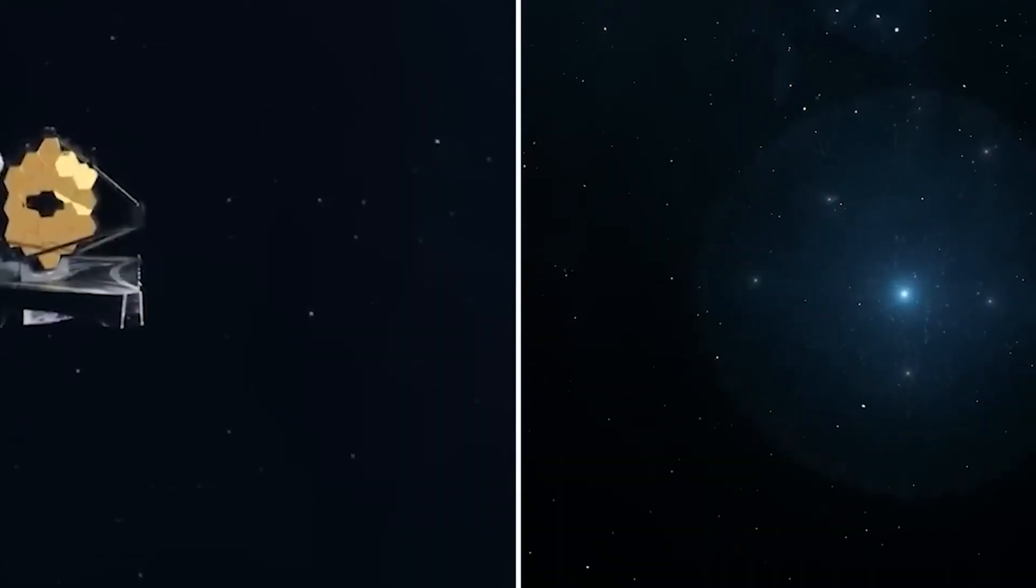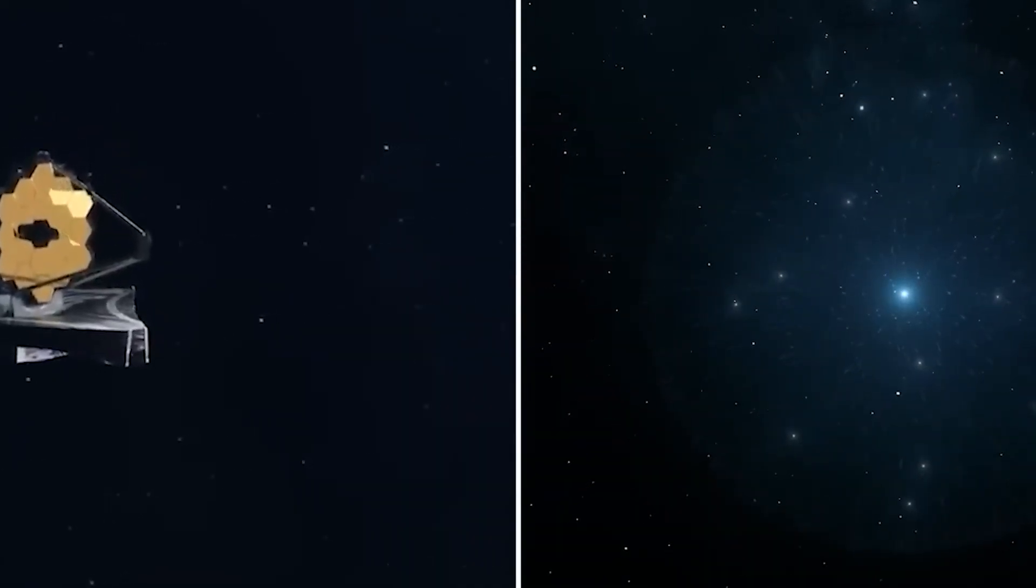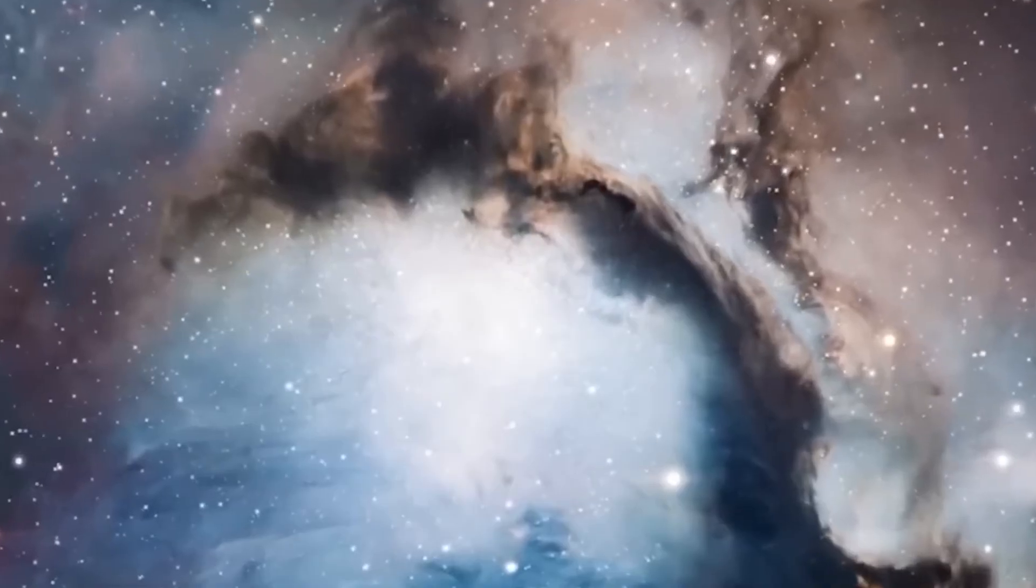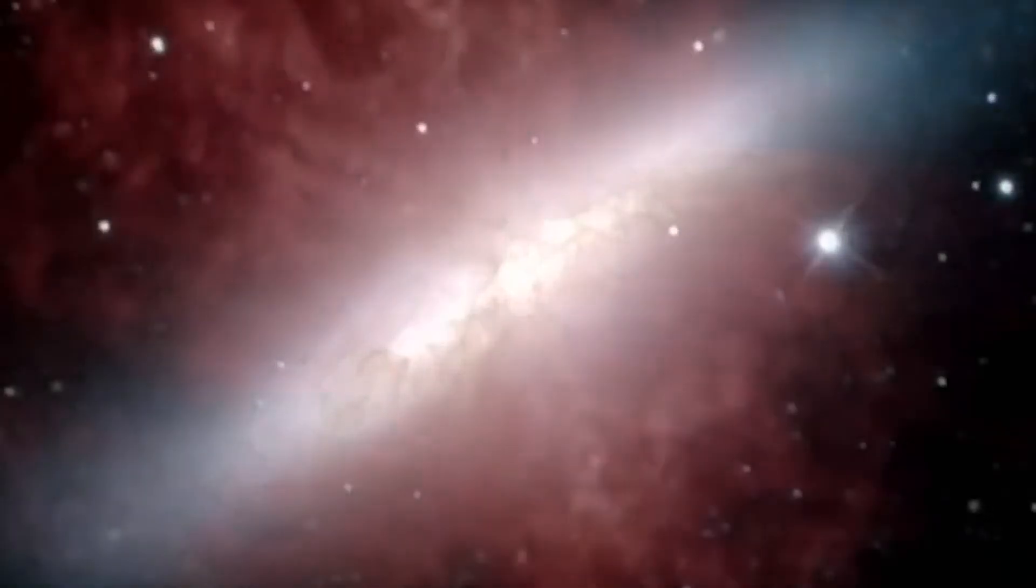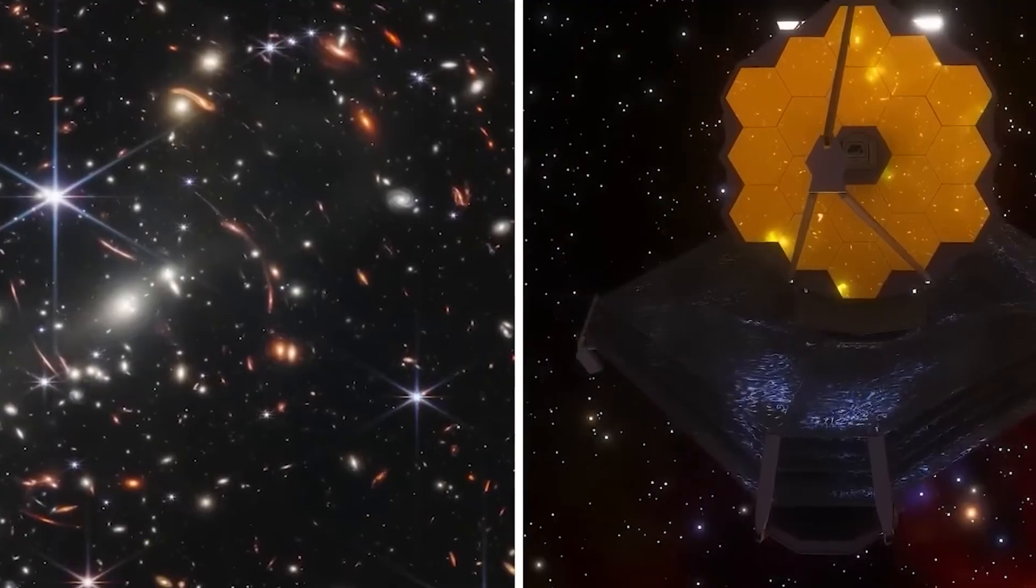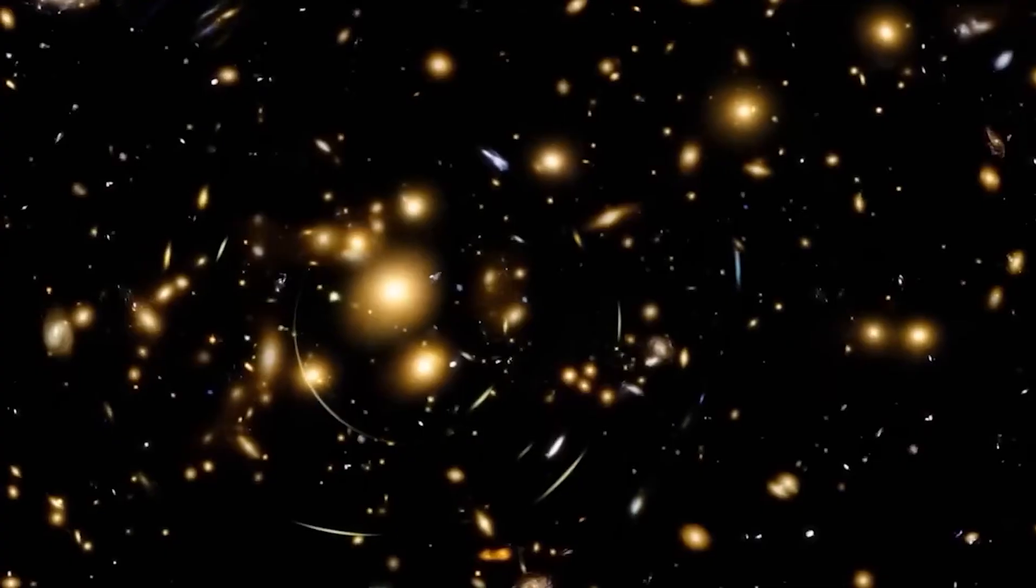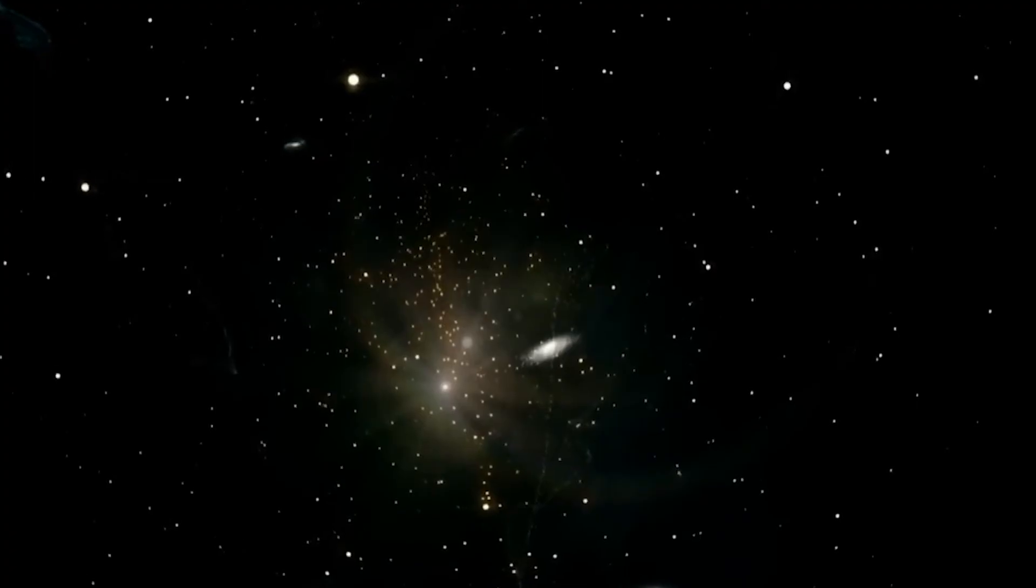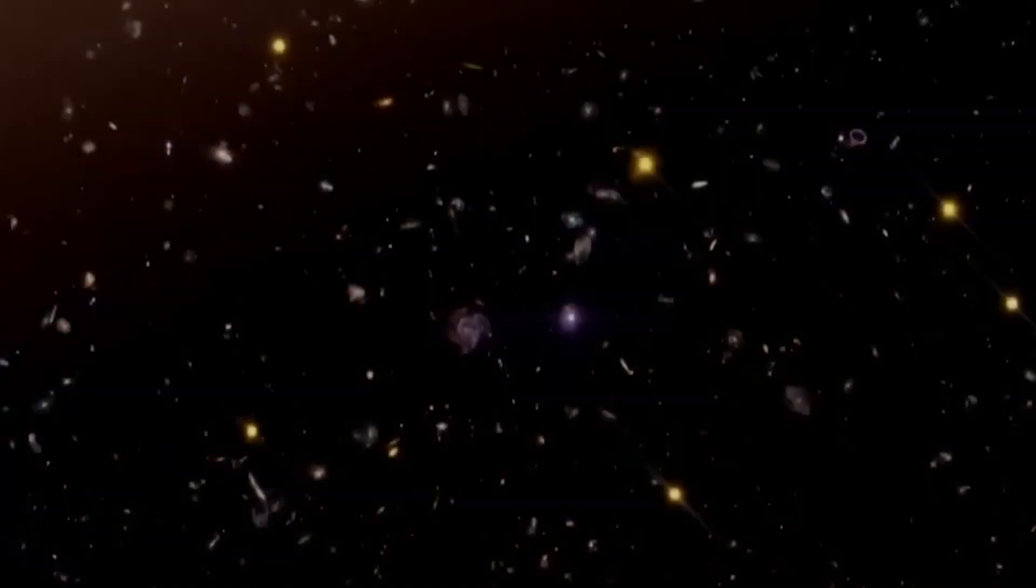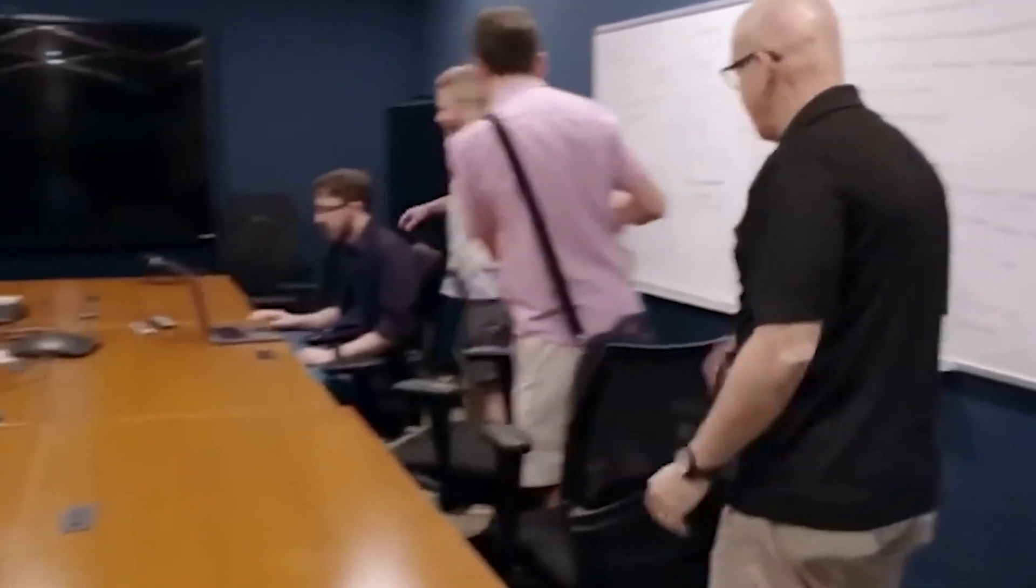The discovery of Alcyoneus and other gigantic objects in space can massively impact our understanding of space and the universe in several ways. Firstly, it will provide important clues on the formation and evolution of galaxies, and help scientists study more of the distribution and properties of dark matter. Moreover, this discovery can also help us explore the limits of our current understanding, which can lead us to raise new questions and venture into discoveries.